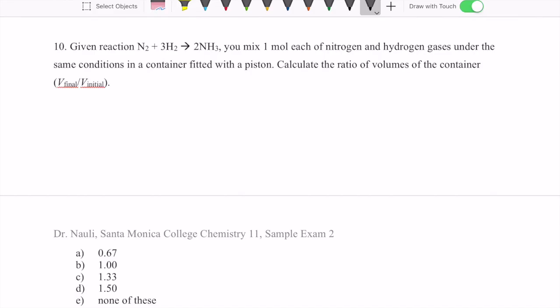All right, let's take a look at CHEM 11 sample exam 2, number 10. This question gives us a reaction of two gases that produce a third gas, and it says that you're going to mix one mole of each of the reactant gases under the same condition. And the question is, what's the ratio of the volumes at the end?